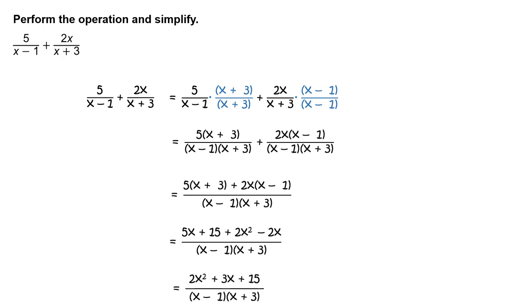In the numerator, combine like terms. Simplify to get the quantity 2x squared plus 3x plus 15, divided by the quantity x minus 1 times the quantity x plus 3.